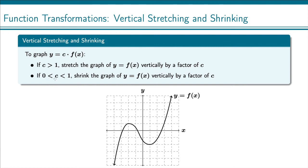If you have a number between 0 and 1, then when multiplying by that, we get smaller. And so that's a vertical shrink. Again, by a factor of c. So if that number is, say, 1 half, all of our y values get cut in half.